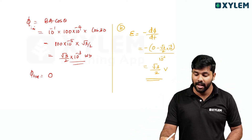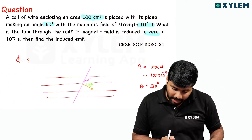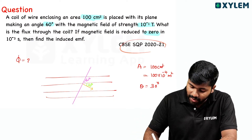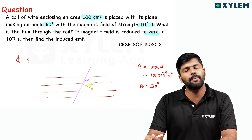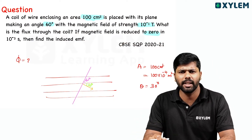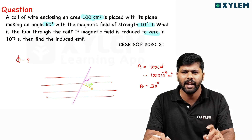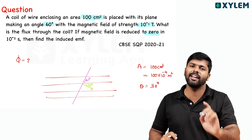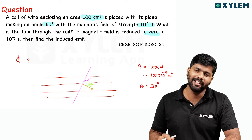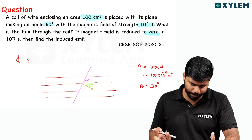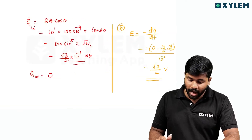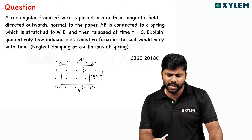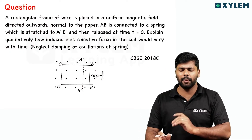Simple question. This is from 2020-21 sample paper. The trick here is the angle — the plane makes 60° with the field, so the angle between the area vector and the field is 30°. Take the correct angle. Next question — we have 4 questions total.